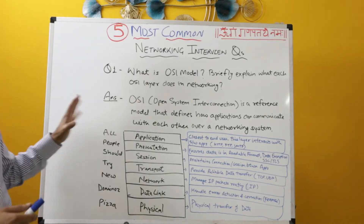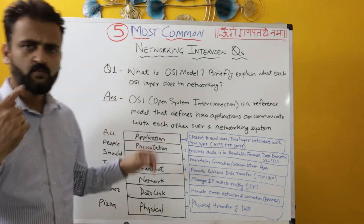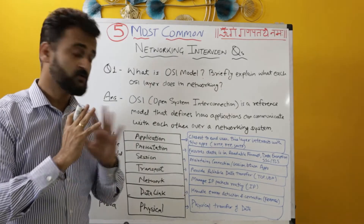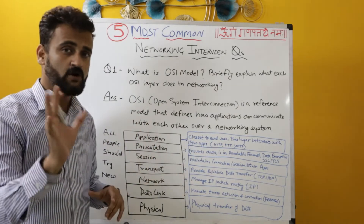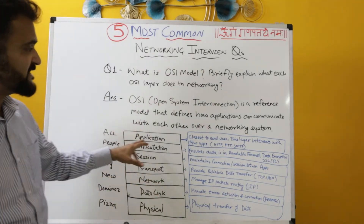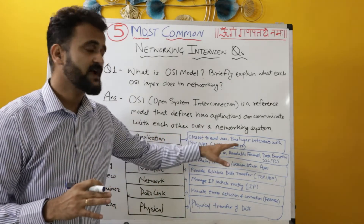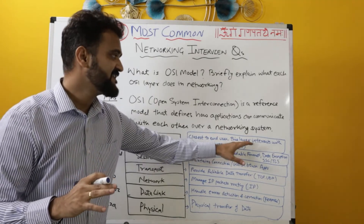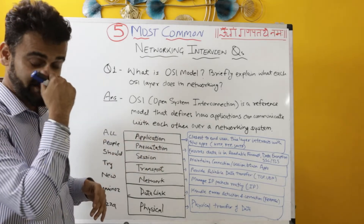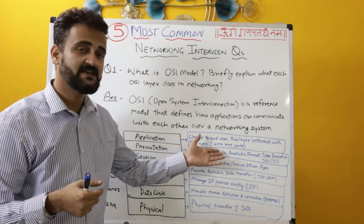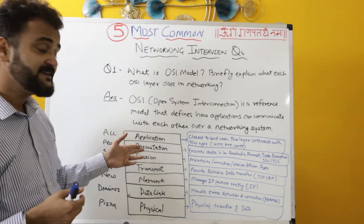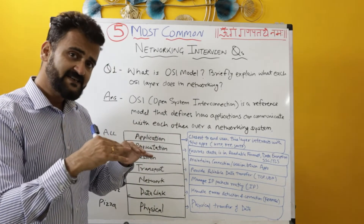Quickly, in one line, here's how you would describe each layer. The Application layer is closest to the end user — this is the layer where interaction happens with the software application. Generic protocols used here are HTTP, FTP, and SMTP. At the Presentation layer, it ensures that whatever data is coming in is actually being converted into a human-readable format.